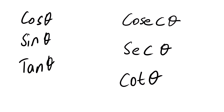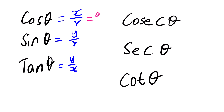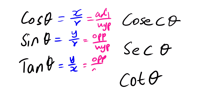We know the expression of cos — it's x over r. Of sine — it's y over r. Of tan — it's y over x. And then when we express this in terms of sides, we know that cos is adjacent over hypotenuse, sine is opposite over hypotenuse, and tan is opposite over adjacent.